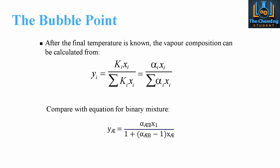For a binary mixture, we can apply the Henry's Law principle to say that the vapour composition Y equals the relative volatility of component A multiplied by the liquid composition of component 1, divided by 1 — because we assume that the addition of X and Y will equal 1. So we exploit the fact that YA + YB = 1 and XA + XB = 1. For example, if the liquid composition of A was 40%, then the remaining 60% must be made from component B.